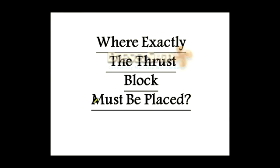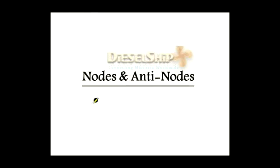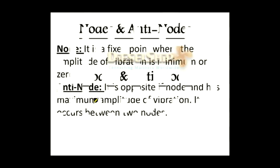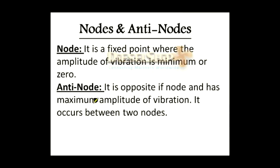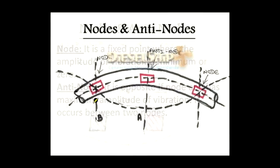What are nodes? A node is a point where there is no vibration, or the amplitude of vibration is zero. An anti-node is the opposite — it is a point where the vibration is maximum on the shafting system. Let's see an exaggerated shafting system's vibratory characteristics.